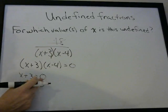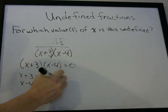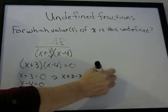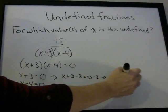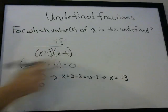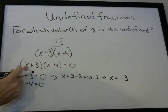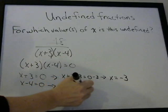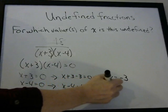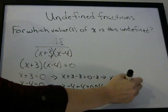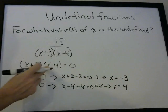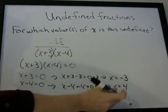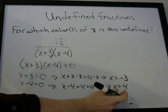When does x plus 3 equal zero? Subtracting 3 from both sides: x equals negative 3. When x equals negative 3, negative 3 plus 3 is 0. Or, for x minus 4 equals zero: adding 4 to both sides gives x equals 4. If x equals 4, then 4 minus 4 is 0. So our two answers are x equals negative 3 or x equals 4.